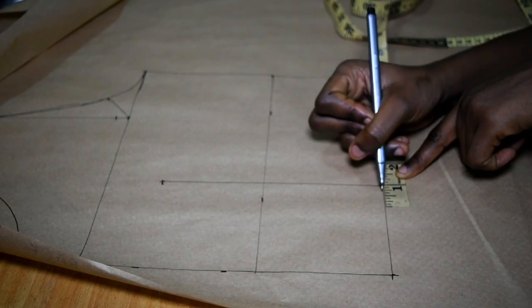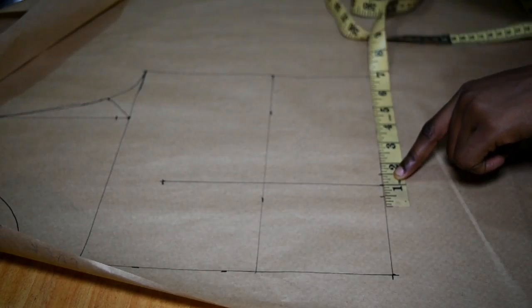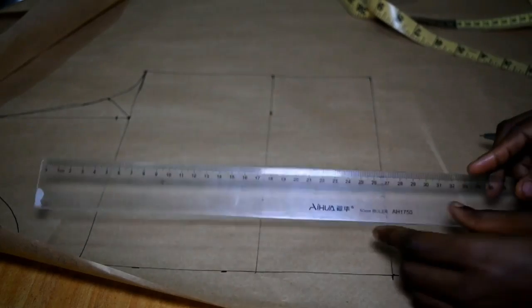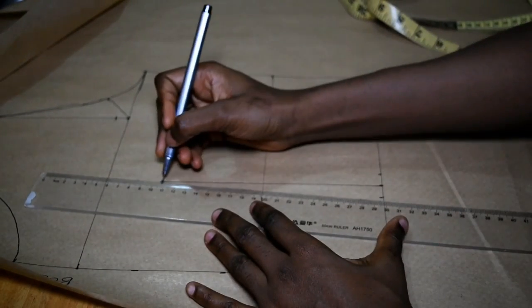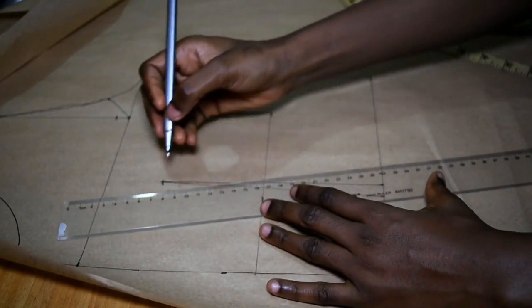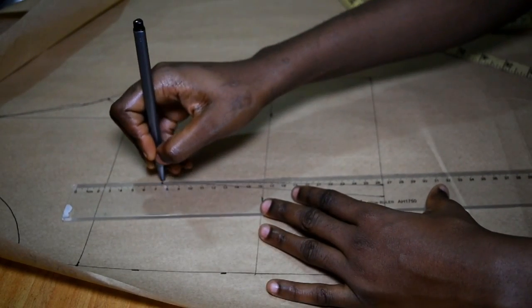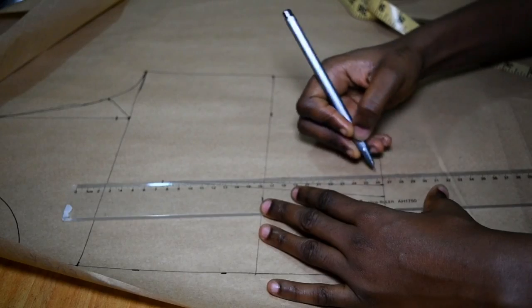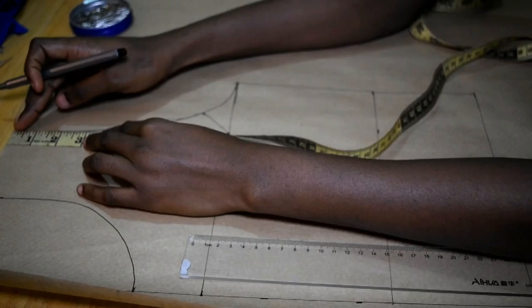Now the princess seam for the back bodice is known as easy fit, and for the front bodice is known as the bust cuts. So this is the plain simple dart.